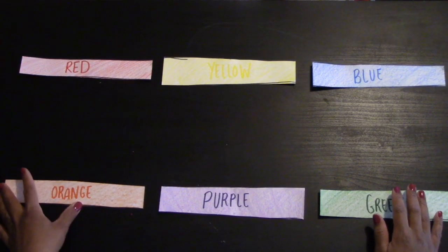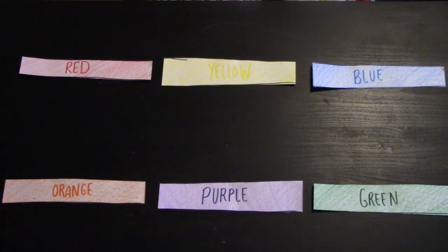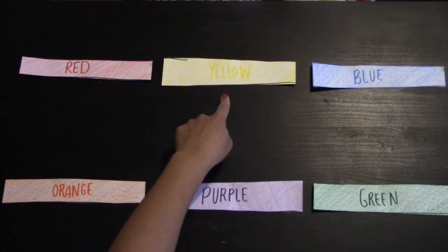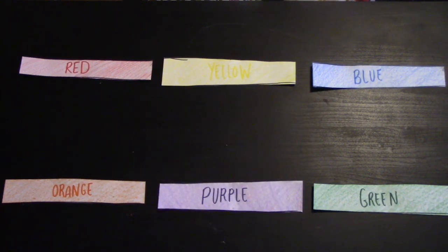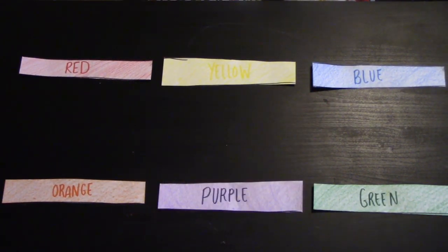Let's start off with talking about primary colors. Red, yellow, and blue. Let's do that one more time. Red, yellow, and blue. Those are our primary colors.